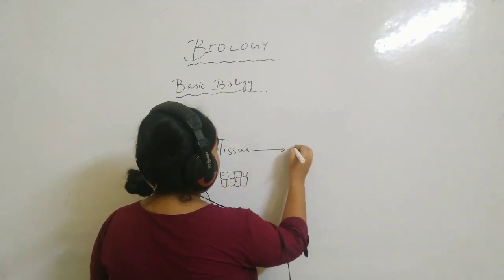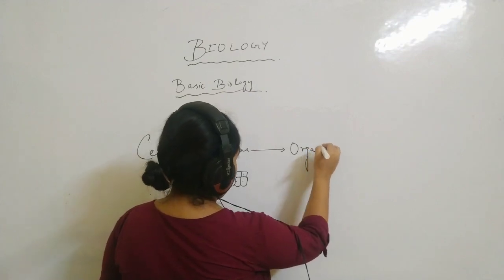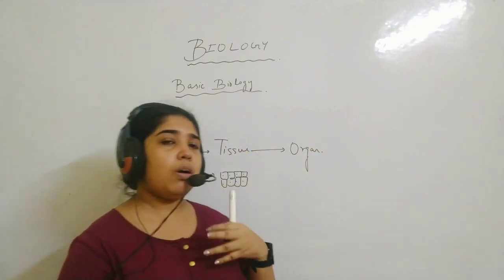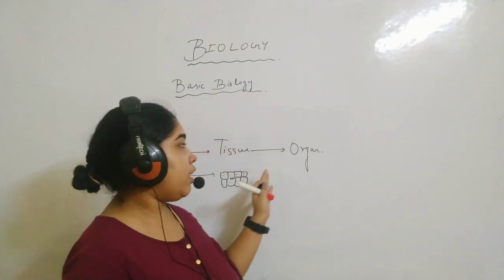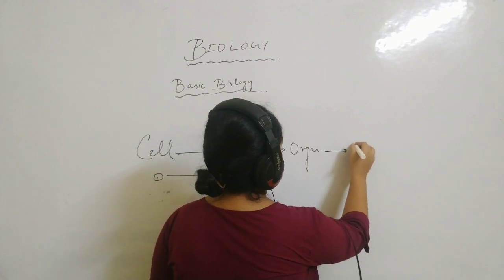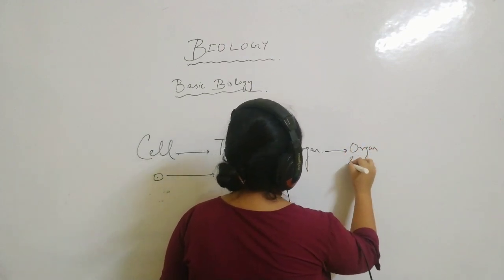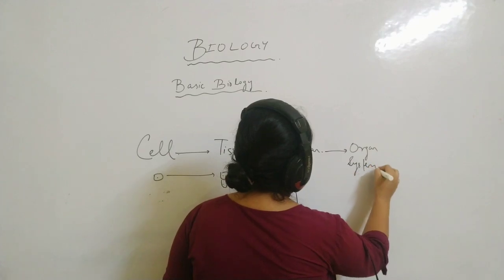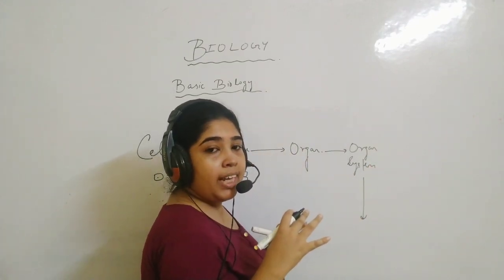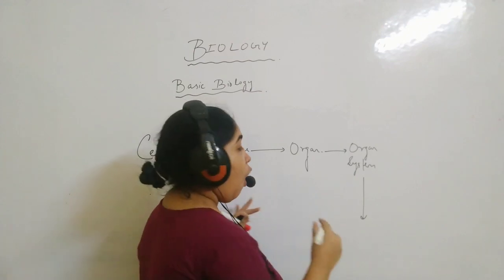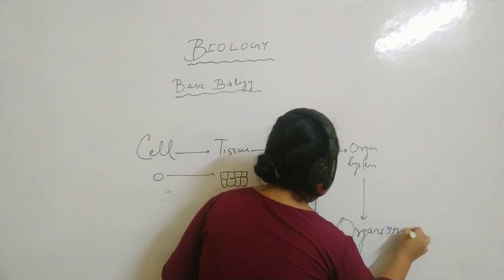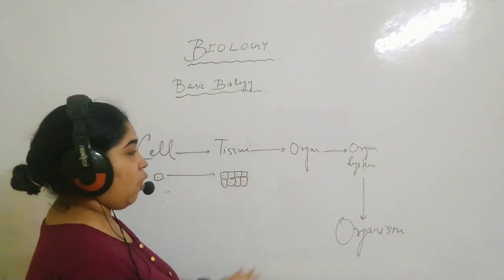From a tissue, organs come up. Organs — you understand — like the nose is an organ, the eye is an organ, and many other organs are there. A cluster of many organs is known as an organ system. And many organ systems together make an organism.